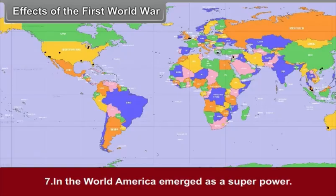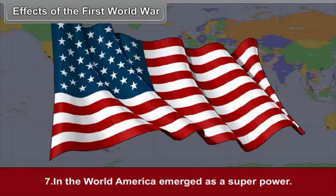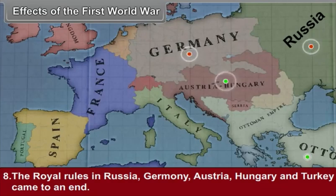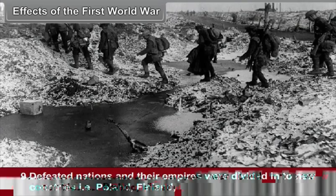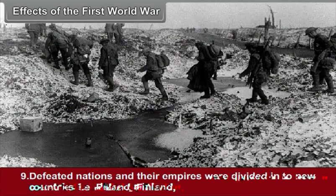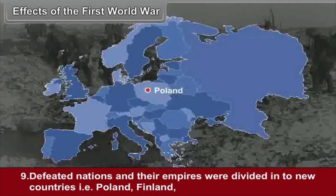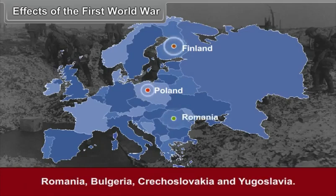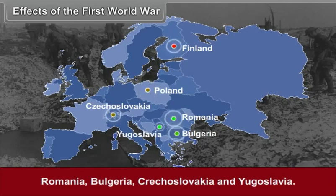Seventh, in the World War, America emerged as a superpower. Eighth, the royal rules in Russia, Germany, Austria, Hungary and Turkey came to an end. Ninth, defeated nations and their empires were divided into new countries — Poland, Finland, Romania, Bulgaria, Czechoslovakia and Yugoslavia.